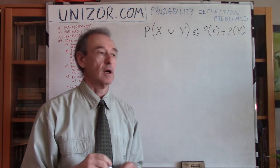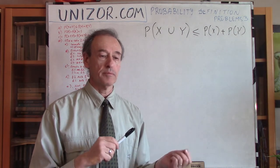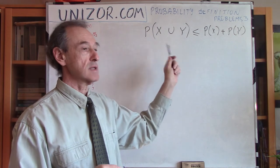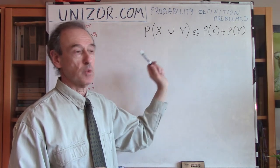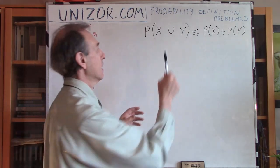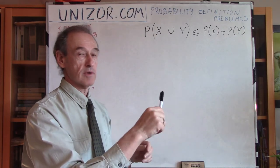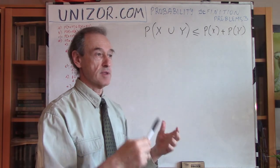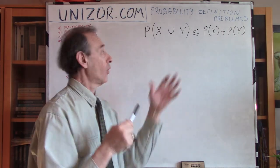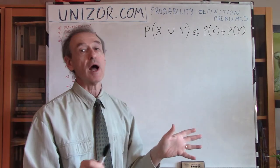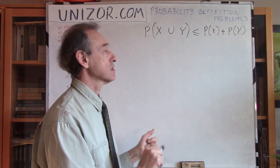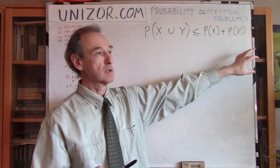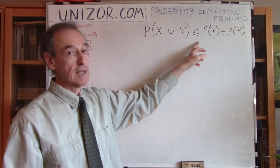If you remember the previous lecture, which was about event arithmetic, it contained the material where this was actually an exact equality — that's in the case when these events X and Y are mutually exclusive. A certain number of elementary events went into X, and completely different ones went into Y, in which case the measure of their union includes all elements of X plus all elements of Y with no common elements. But in the general case, this is less than or equal.